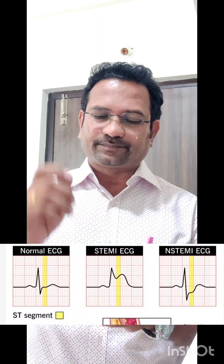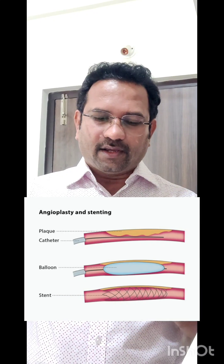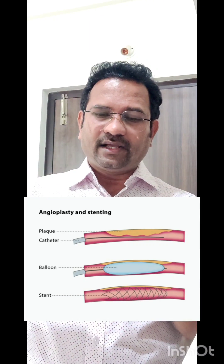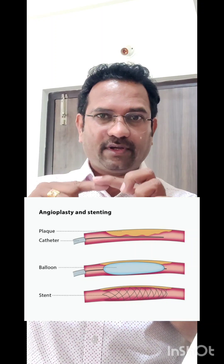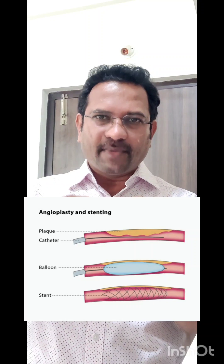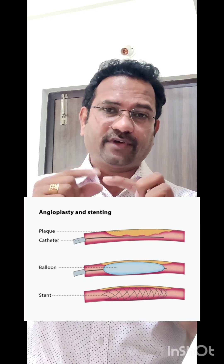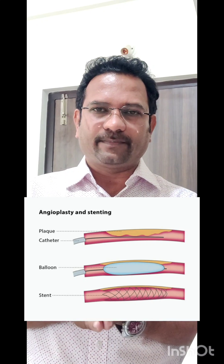STEMI is dangerous because the occlusion is for a longer period of time. To treat it, primary percutaneous coronary intervention — also known as angioplasty — is performed. A balloon is inserted and the coronary blood vessel diameter is increased. Sometimes a stainless steel mesh, called a stent, is placed there to permanently increase the diameter of the coronary blood vessel.